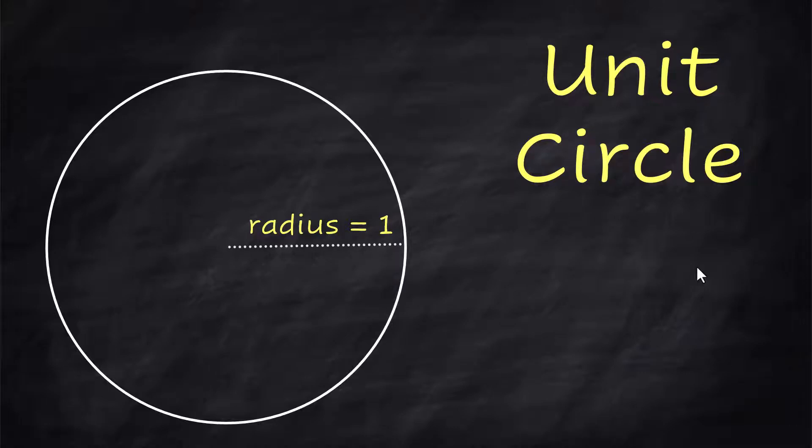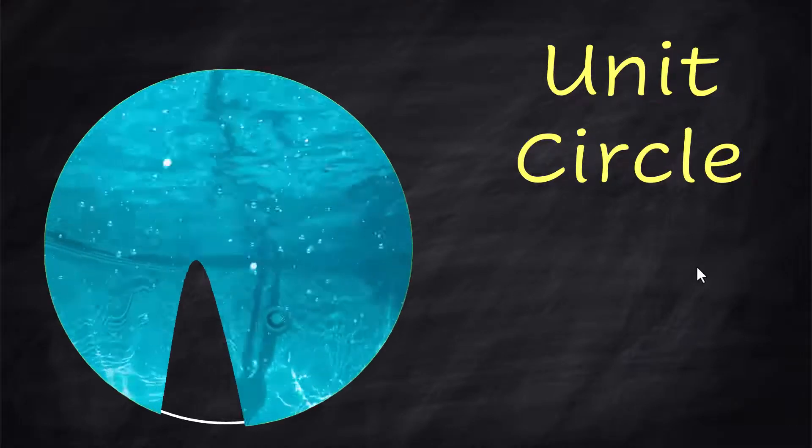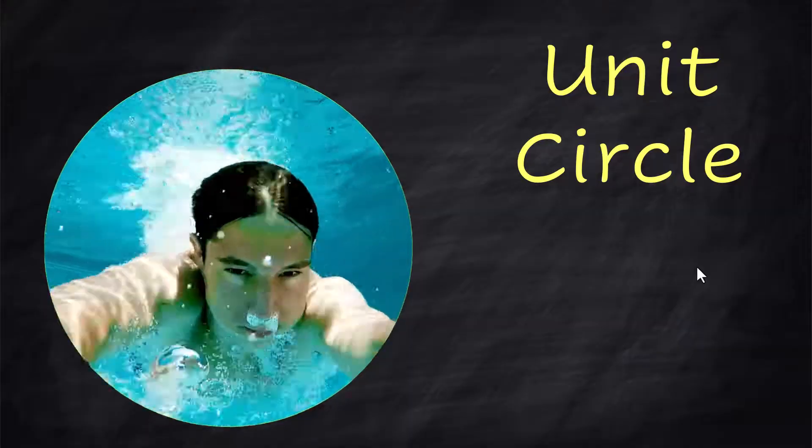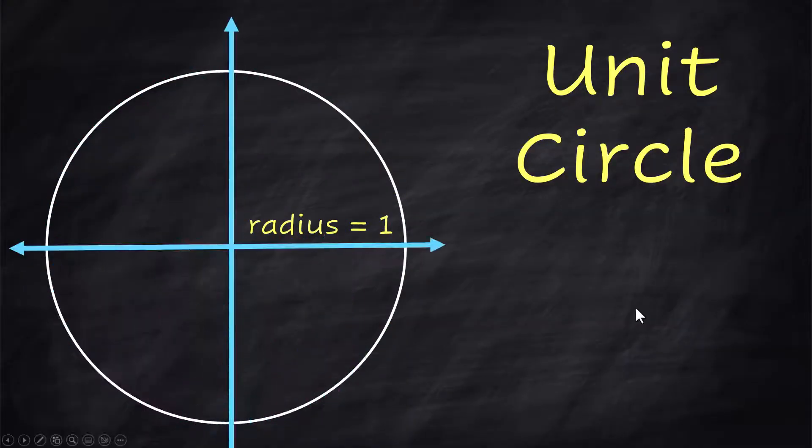I'm Tammy and I do math for coffee and we are diving into the unit circle and we're showing you a way to find all the coordinates. First of all, think about your unit circle on a coordinate graph with the origin right here at the center. We know the radius is 1.